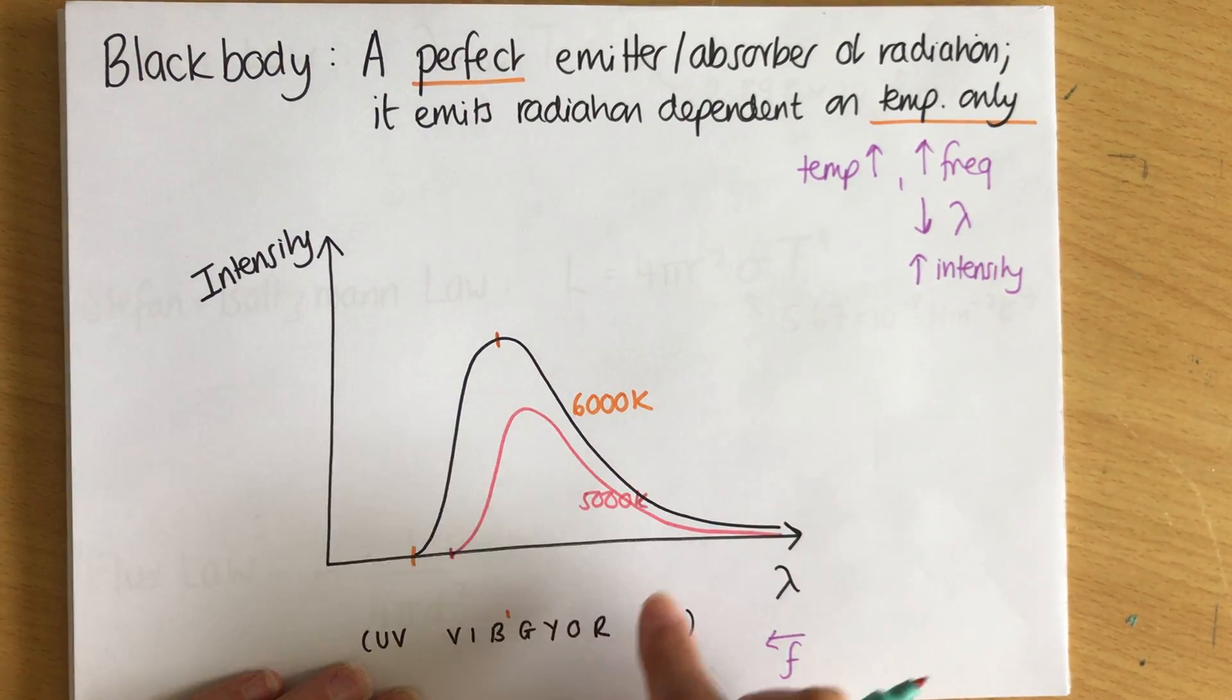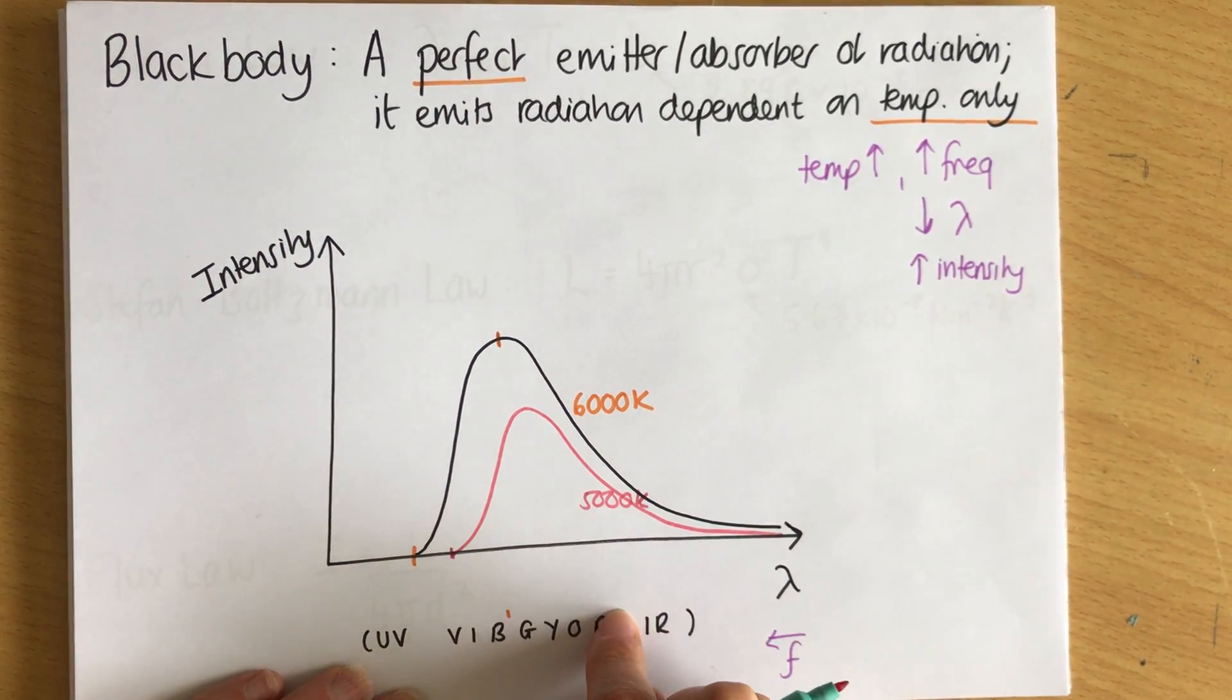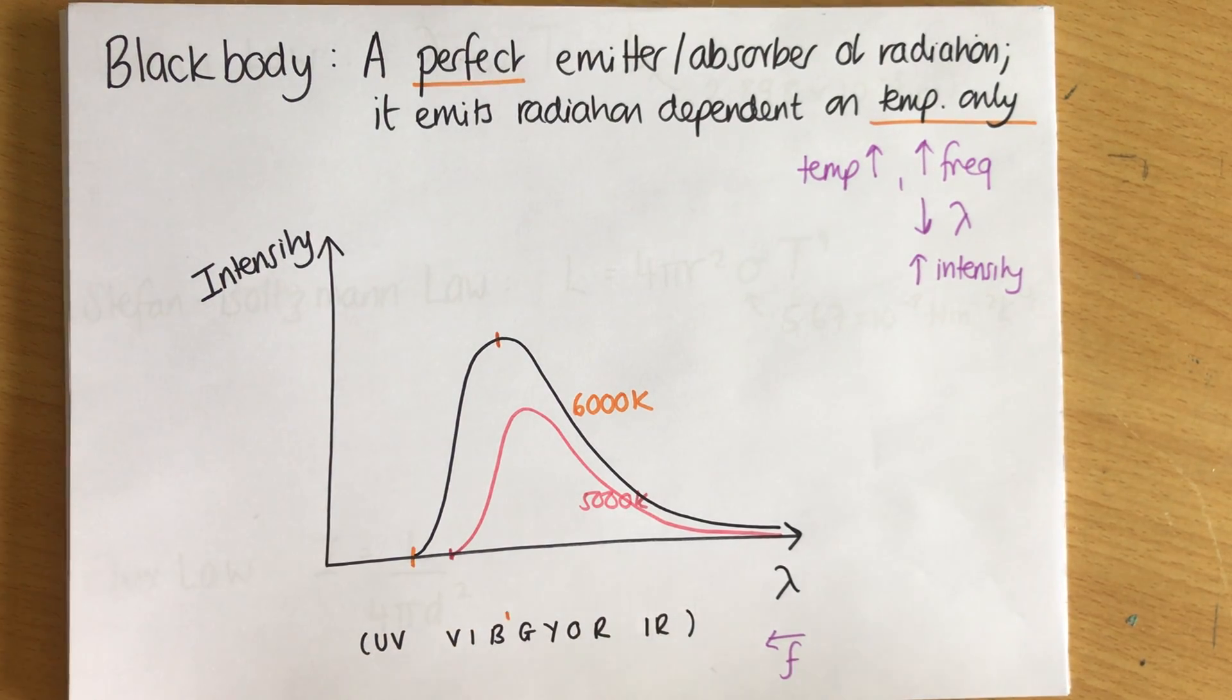A colder star, again, might have a peak further over at the red point. And then that would be like a red giant. Red giants are cooler, because their principal radiation is red, which is a longer wavelength than other stars.